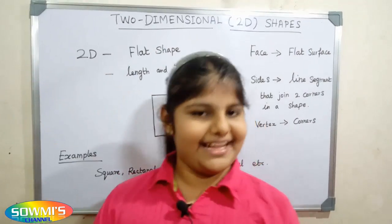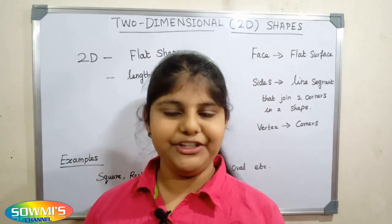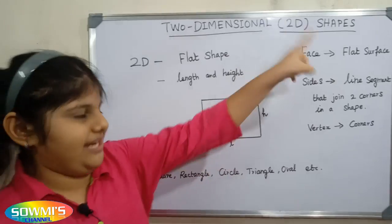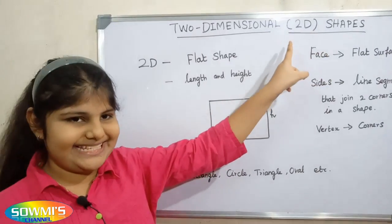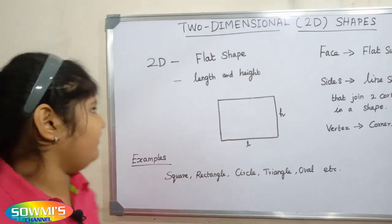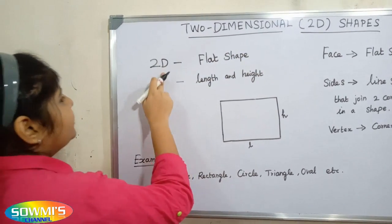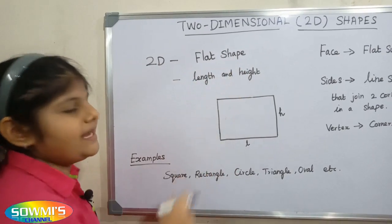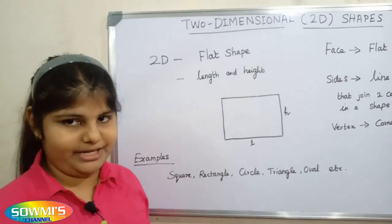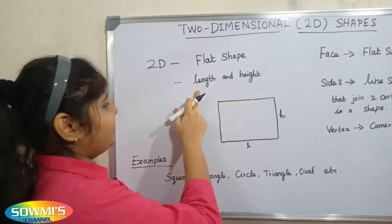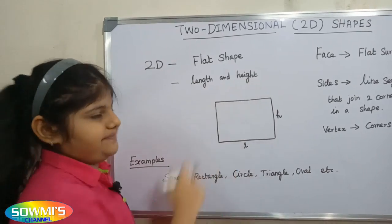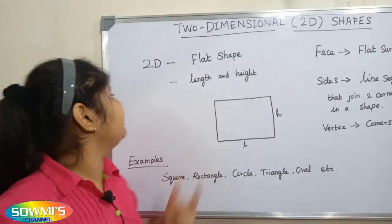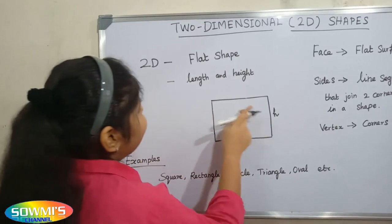Hi friends, in this video we are going to discuss about 2D shapes. 2D stands for two dimensional. 2D is a flat shape. It has two measurements such as length and height.